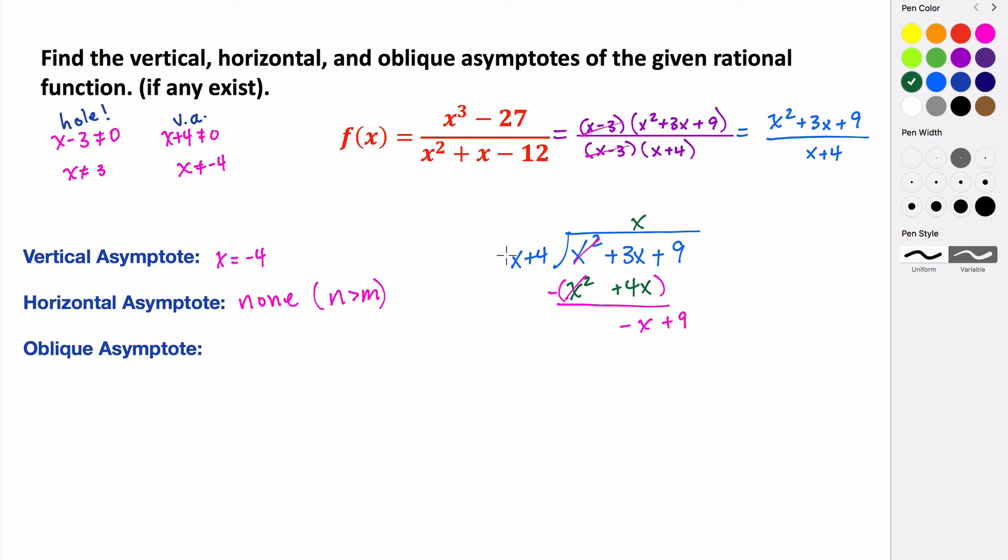Then we ask ourselves, what do I have to multiply x by to get negative x? Well that's just a negative 1. Distribute. Negative 1 times x. That's negative x. Negative 1 times 4. That's negative 4. And then again, we subtract the whole thing. Which distributes the negative through. So these are opposites. So they cancel. And then 9. And that's going to be plus 4. That's 13. So we don't have a remainder of 0. Which means that this is not a factor of this. But this remainder is going to be part of this. So this really is going to be plus this remainder over this. So plus 13 over x plus 4.